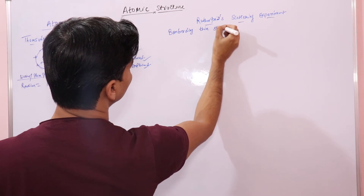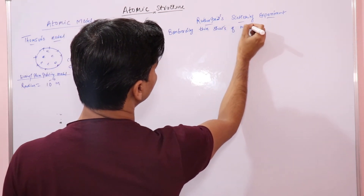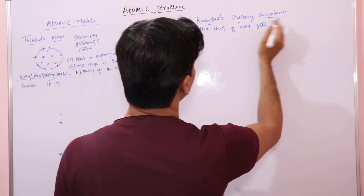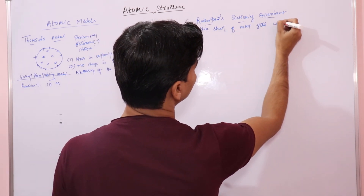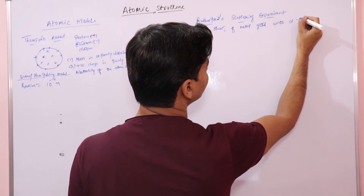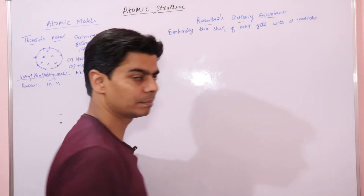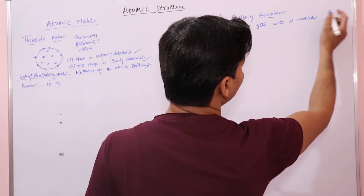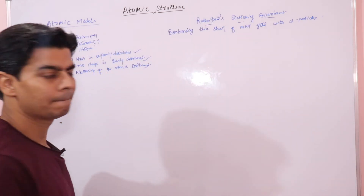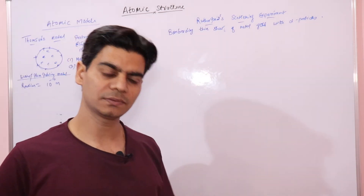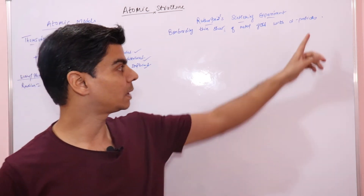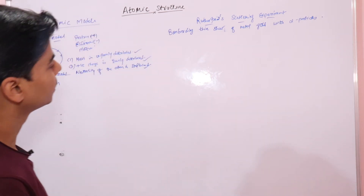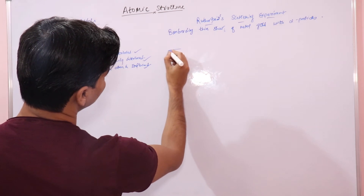They bombarded thin sheets of metal - gold, and also silver - with alpha particles. Alpha particles are the same as helium particles, so we can also call them helium particles. We know that radioactive substances emit alpha, beta, and gamma rays. The source of alpha particles in this experiment would be a radioactive element - for example, polonium.